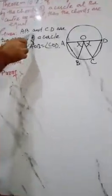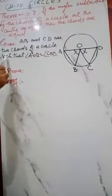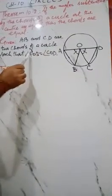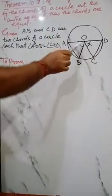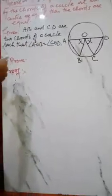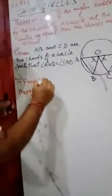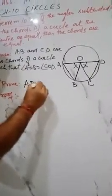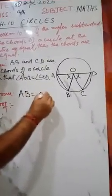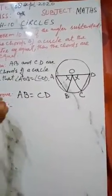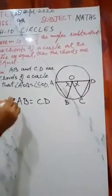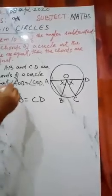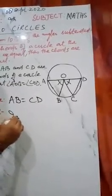So we are given: AB and CD are two chords of a circle such that angle AOB is equal to angle COD. So angle AOB equals angle COD is given. And we have to prove that chord AB equals chord CD.